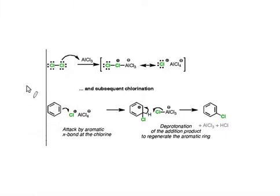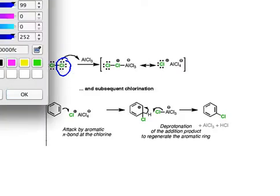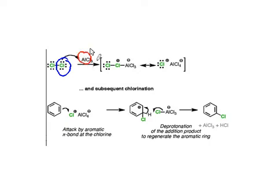We can see immediately we've got this chlorine, and there's an arrow going from one of its lone pairs to the aluminum. Those lone pairs are being donated — it's acting as a Lewis base. Who's accepting them? The electron-deficient aluminum is accepting those electrons. This is a good example where aluminum trichloride is acting as a Lewis acid. It's accepting electrons, but it's not acting as a Brønsted acid, because there's no exchange of protons here — it's not accepting a proton. So this is a Lewis acid but not a Brønsted acid.